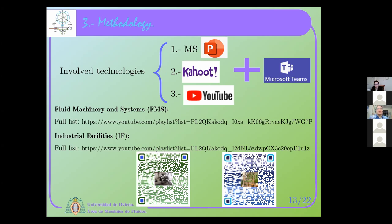The result is two playlists for the two subjects. On the left-hand side we have the QR code for fluid machinery and systems, and on the right-hand side the QR code for industrial facilities. This is given to students at the beginning — at minute zero of the lectures they already have the whole set of lectures for the entire lecturing period on both subjects. This is interesting because they can review any theory class or advance the theory and then pose questions in class.